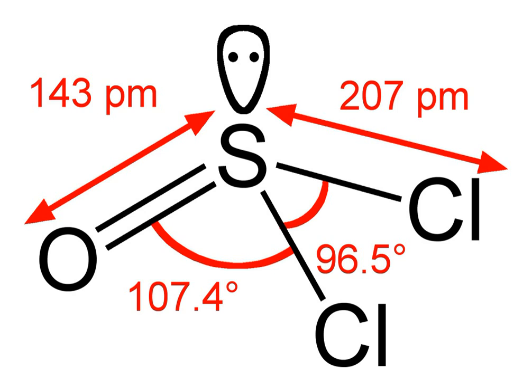Thionyl chloride reacts exothermically with water to form sulfur dioxide and hydrochloric acid. SOCl2 plus H2O yields 2HCl plus SO2. By a similar process it also reacts with alcohols to form alkyl chlorides.